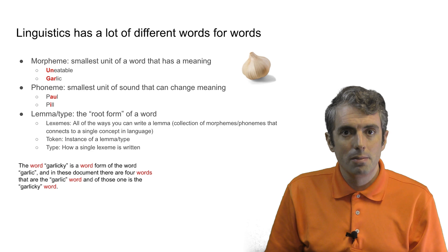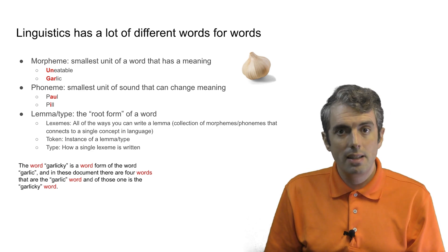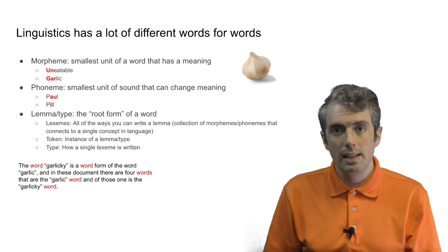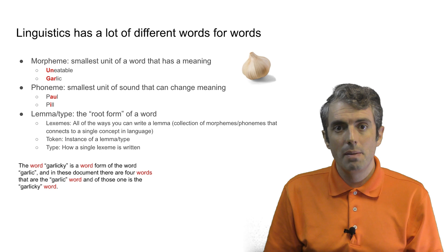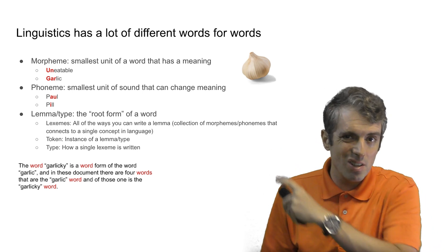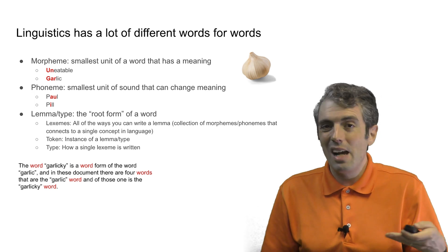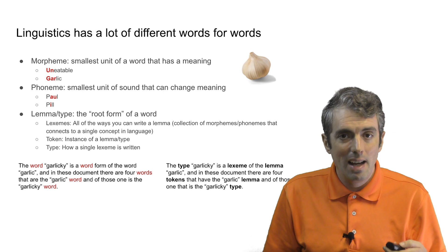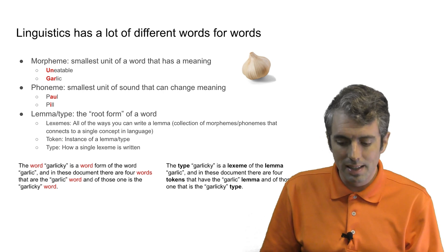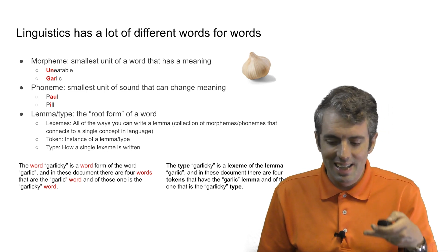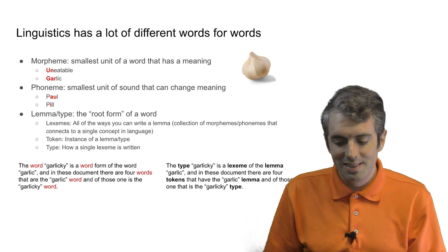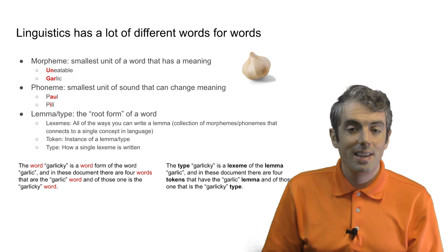What's the difference between a lemma and a type? A type is a string. "Garlics," "garlic," and "garlicky" are all different types. But these types share a connection — they're all lexemes of one lemma. That lemma is an assumed root form that may never actually be written down, but in this case it's actually a type: garlic. So instead of using all these different things we might casually call "word," we can reduce this into something more precise. The type "garlicky," which refers to this abstract string, is a lexeme of the lemma garlic. And in this document, there are four tokens that have the garlic lemma, and one that is the garlicky type.